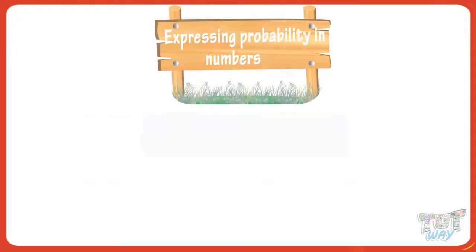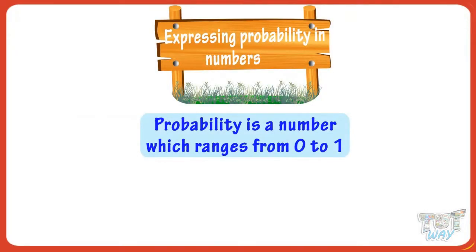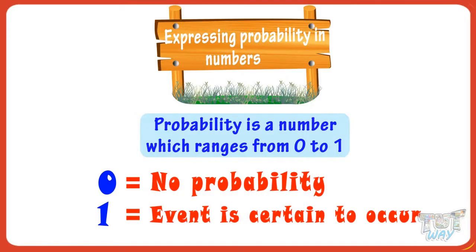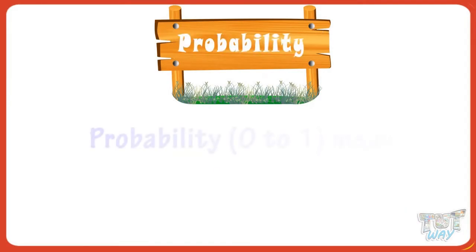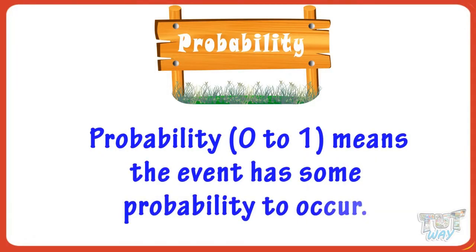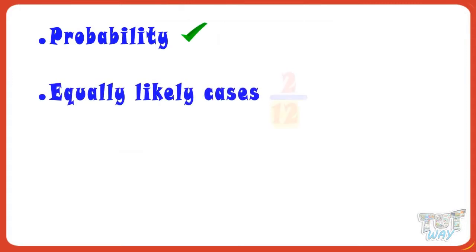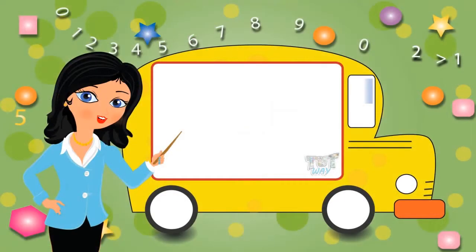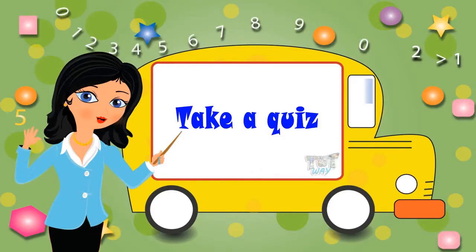So, kids, probability is a number which ranges from 0 to 1. 0 means no probability, and 1 means the event is certain to occur. And probability between 0 and 1 means it has some probability to occur, but not certain to occur. So, kids, you now have a fair idea about what is probability, what are equally likely cases or possible outcomes, what are favorable cases, and how to find probability. So, now you may go ahead and take a quiz to learn more. Bye-bye!